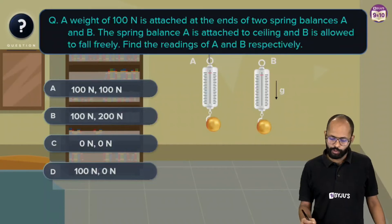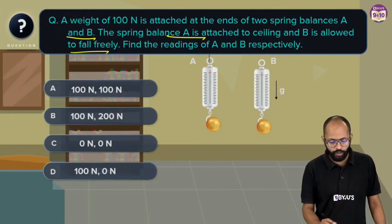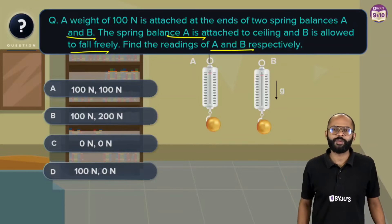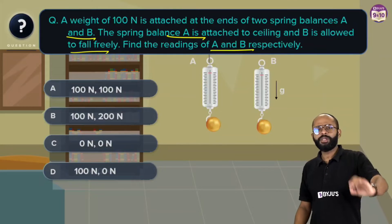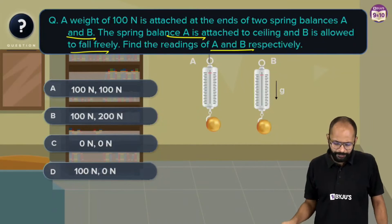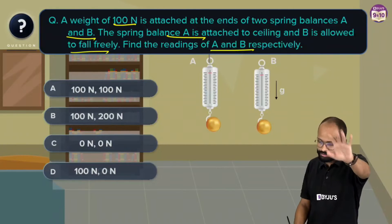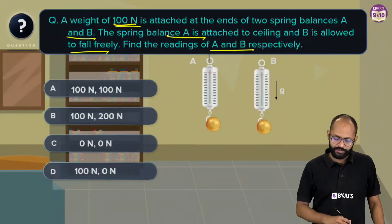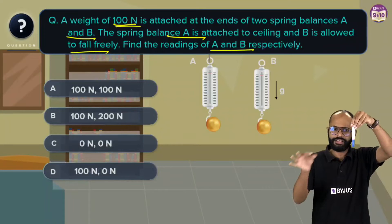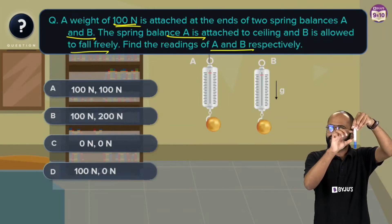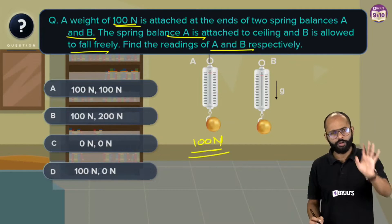New question: A weight of 100 newtons is attached to the end of two spring balances A and B. Spring balance A is attached to the ceiling and B is allowed to fall freely. Find the readings of A and B respectively. Spring balances measure force. A is at rest — if you hang a 100 newton weight on a stationary spring balance, it reads the weight of the mass, so A reads 100 newtons.